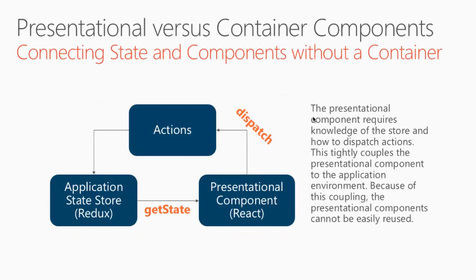Now let's take a quick look at this diagram and see how we can connect state with components without using a container, and some of the downsides of that. As you see here we have our presentational React component. This is typically how you've been building your applications. The presentational component has to have knowledge of how to get the actual application state in order to display it on the screen, so it's locked into this particular application and how it manages its state in addition to doing its UI responsibilities. Also the presentational component has to know how to dispatch actions with the store's dispatch function. So in this case our presentational component is really responsible for doing two things: displaying the UI stuff as well as actually interacting with the application itself, which then tightly couples that component to our particular application.